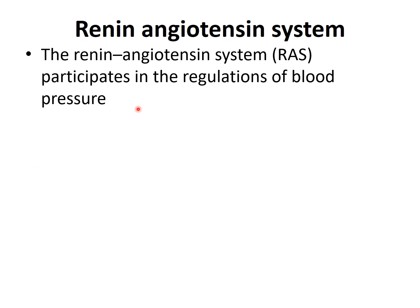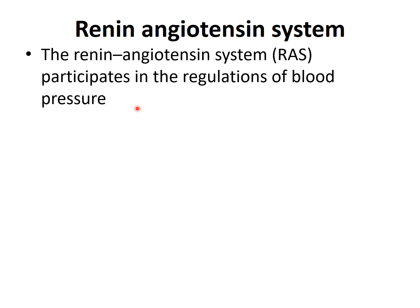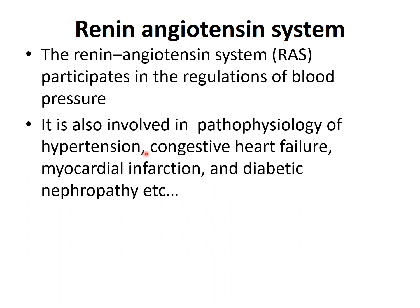The renin-angiotensin system participates in the regulation of blood pressure and is also involved in the pathophysiology of hypertension. Some mutations in genes coding for RAS components — renin receptors, angiotensin receptors, or angiotensin converting enzyme — can lead to increased blood pressure. In essential hypertension, where etiology is unknown (idiopathic), genetic mutation may play a role.